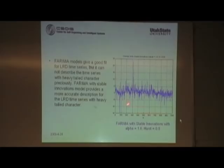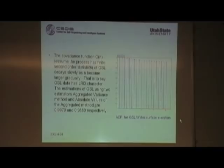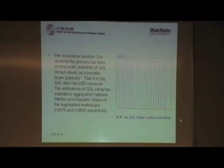This is the analysis of the Great Salt Lake elevation time series. This is the autocorrelation function of Great Salt Lake water surface elevation. We can see that as the lag N becomes larger, the autocorrelation function decays gradually and slowly — indicating long-range dependent character. We use two estimators to calculate the Hurst parameter, which is nearly one, confirming long-range dependence.